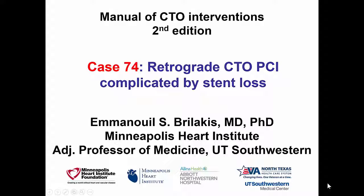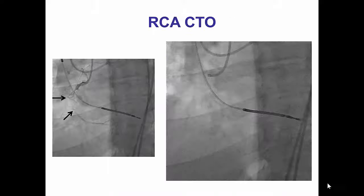Hi, this is Manos Brilakis from the Minneapolis Heart Institute, presenting case 74 for the second edition of the Manual of CTO Interventions. This is a case of retrograde CTO PCI that was complicated by stent loss.